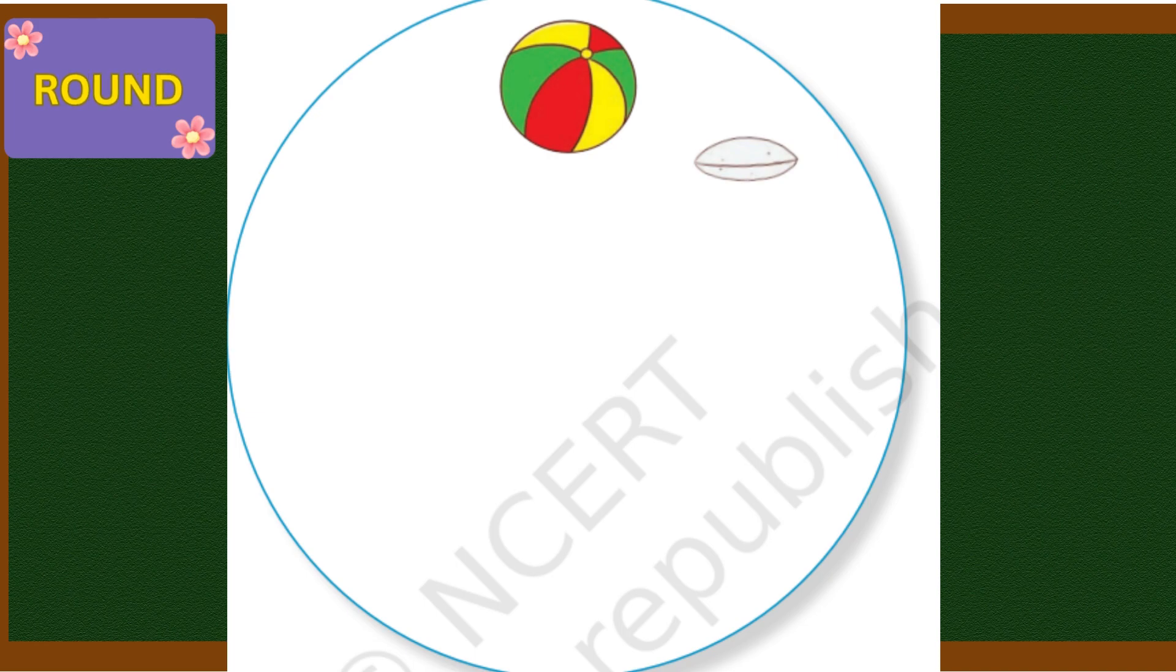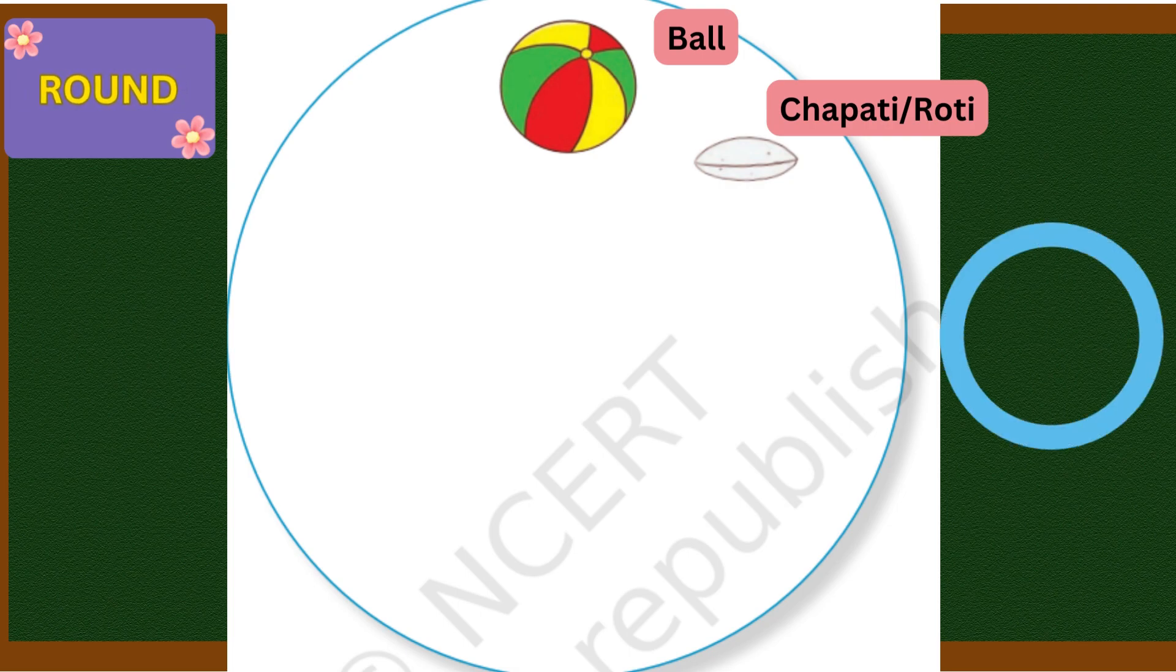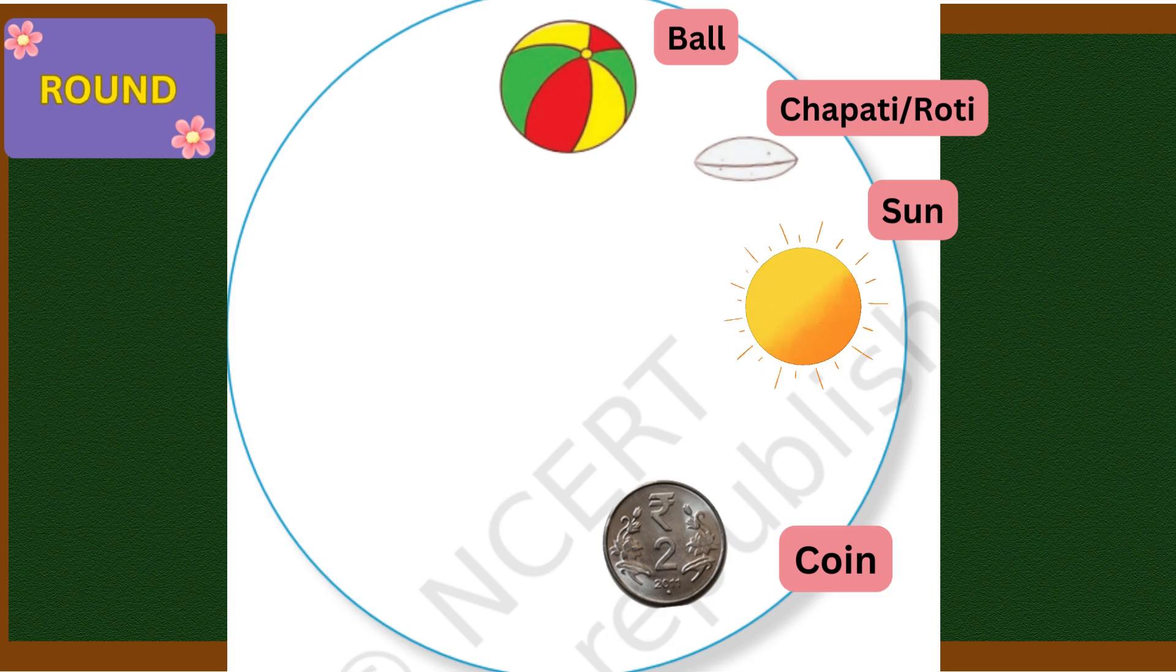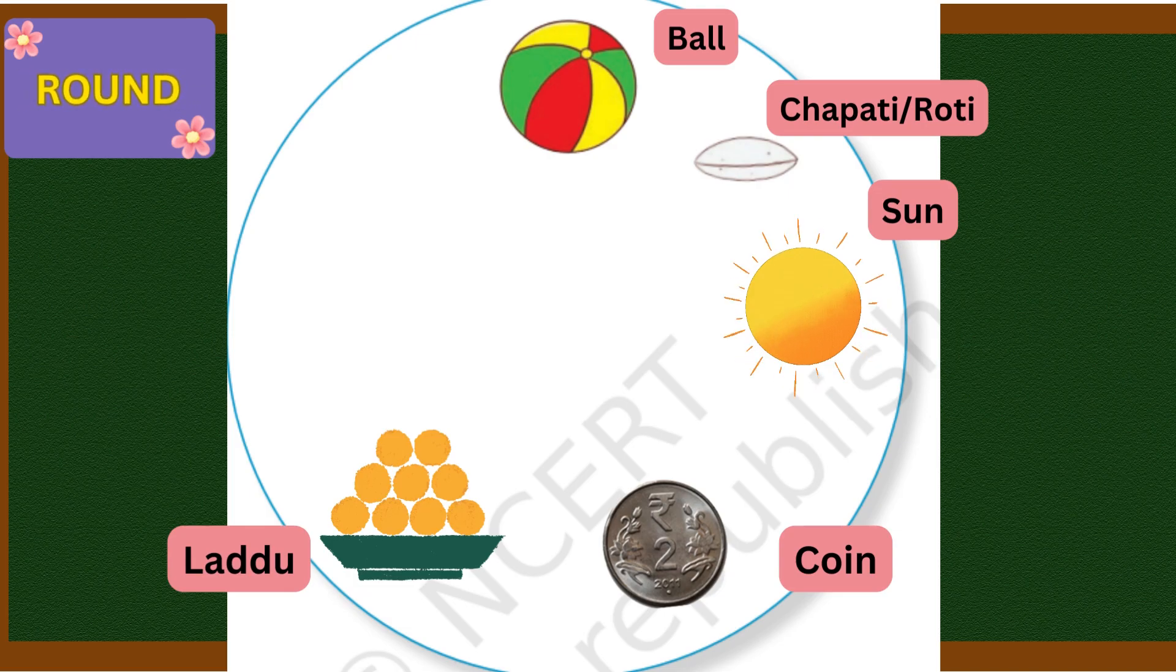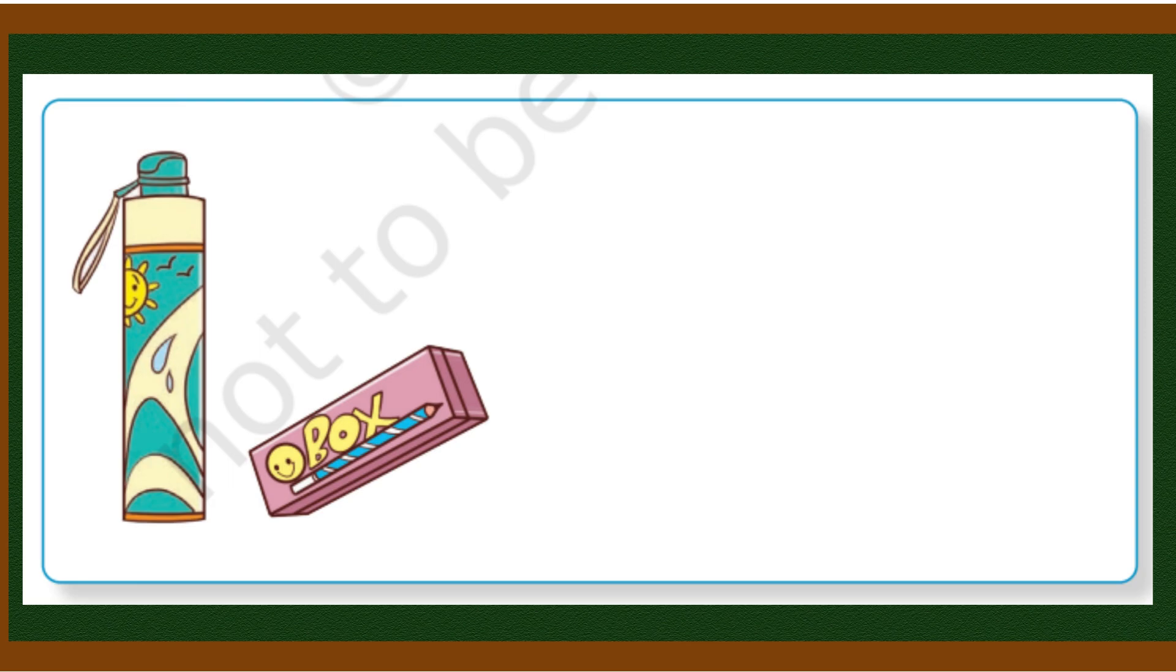Let's start with round ones. Here we can see ball and chapati or roti examples are given. I will draw some more images here. You should also try to make images that are round. I have drawn an example of sun here. Then coin or sikka is also round. You should try to make these yourself. Then laddu - everyone likes laddu. Its shape is round. Then ring, the ring we wear on our finger, its shape is also round if we see it as a circle. Round is also called circle.